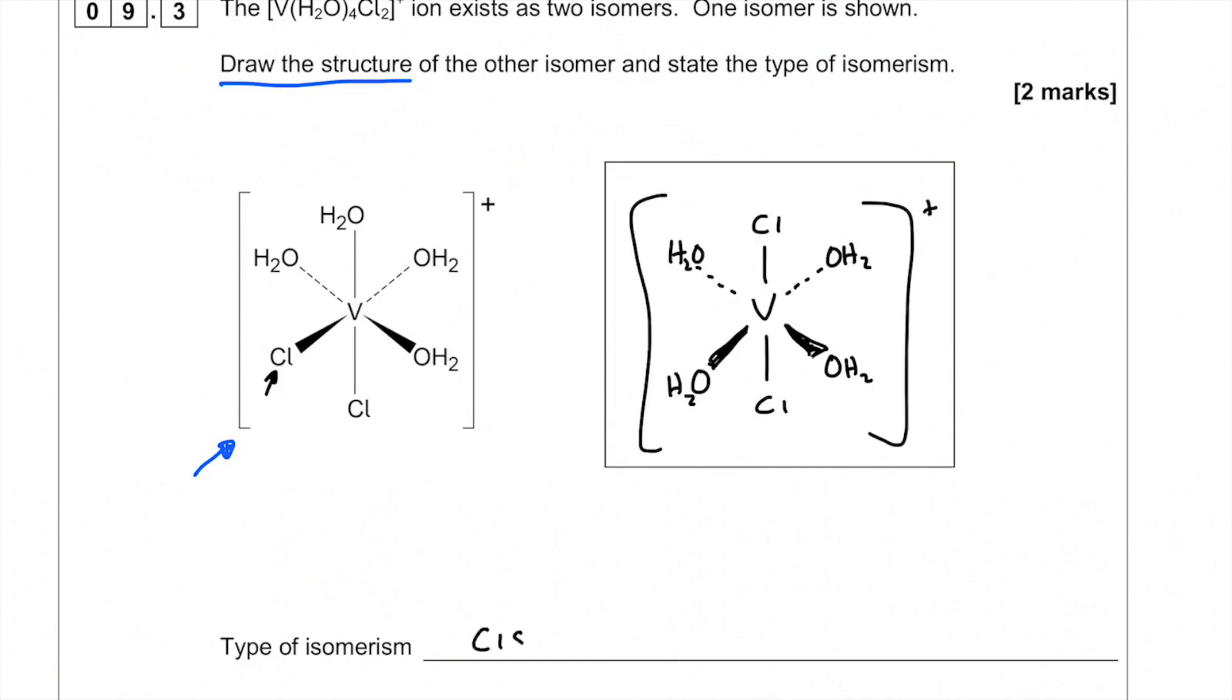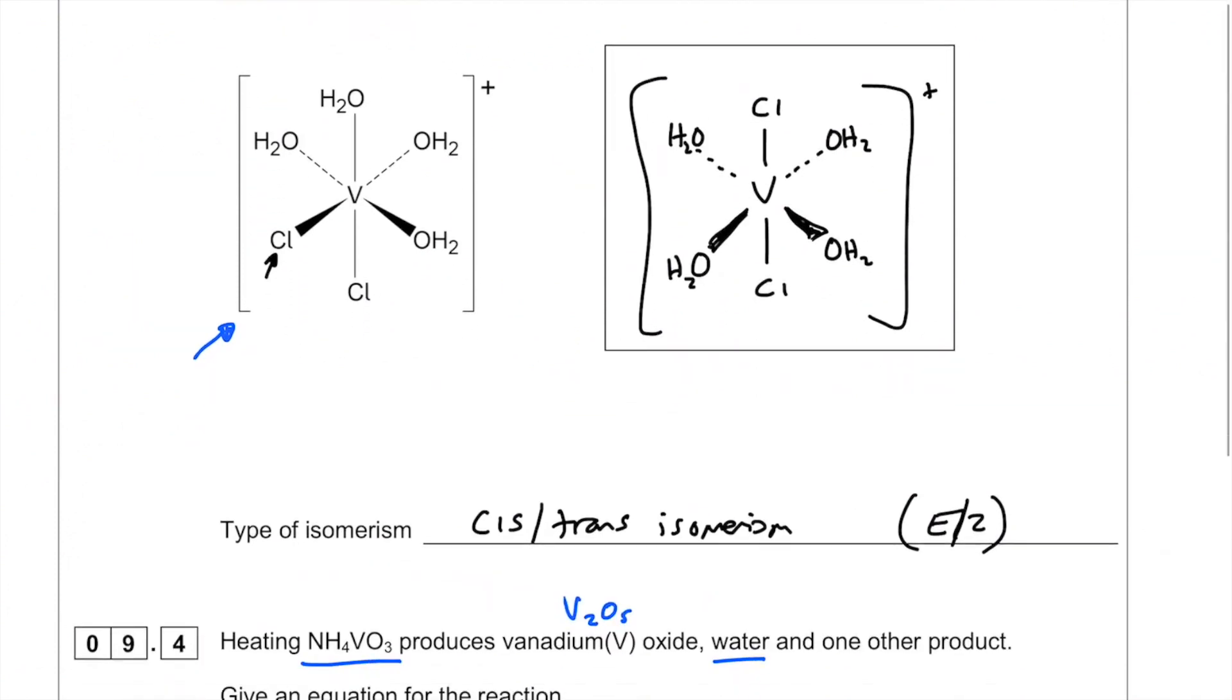Now this type of isomerism is cis-trans isomerism. Now we can call it cis-trans because the two priority groups, the chlorines, are the same as each other. So you are entitled to call it cis-trans isomerism. You could also call it EZ. EZ isomerism can be used for every type of geometrical isomerism like this. So it doesn't matter what the priority groups are, you can always use EZ. I should imagine they'll probably accept that in the mark scheme. But when you've got these two priority groups that are the same as each other, that's when you can use cis-trans. So I'm being more specific here, and that's my final answer.